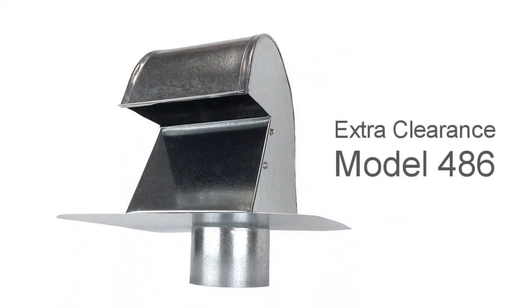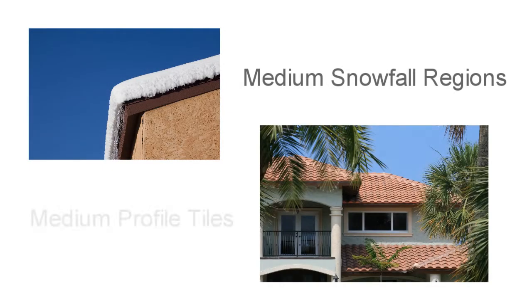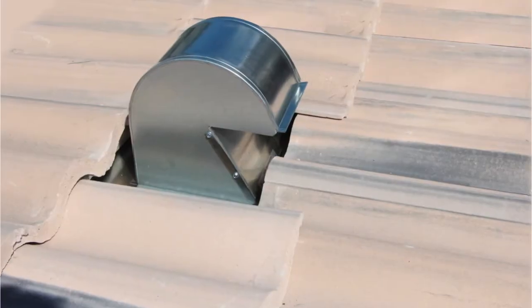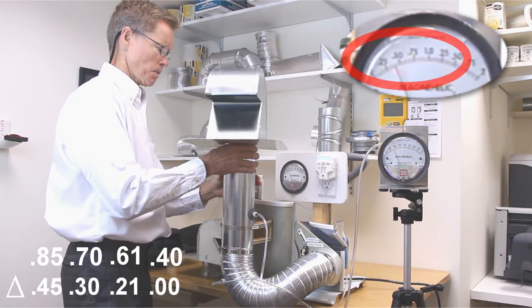Our taller 486 dryer jack is specifically designed for medium snowfall regions and sloped roofs with medium profile tiles like S and Spanish S tile. Notice, this vent also creates almost no back pressure.